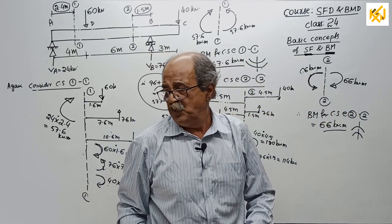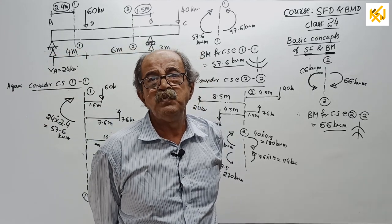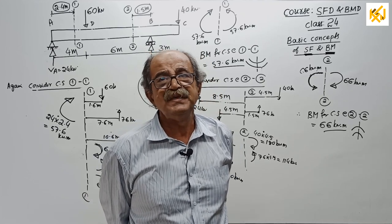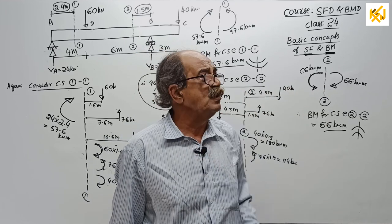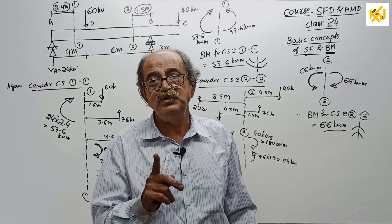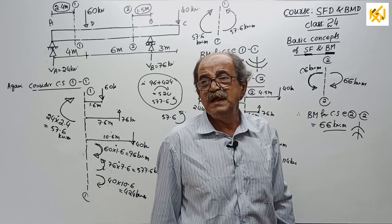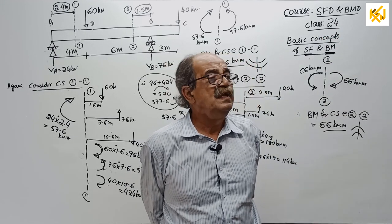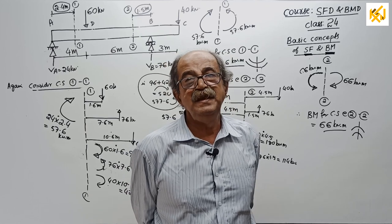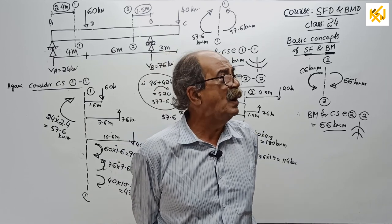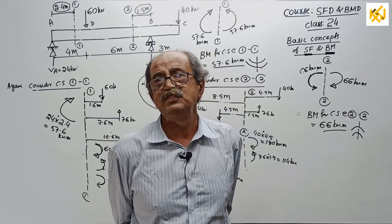Today I explained correctly how to get shearing force and bending moment — no sign convention, just the correct nature. Next class, class 25, I will start sign convention — very powerful. Every word I say there will count. Then I will cover definitions, comparison of equilibrium and section forces, relation between SF, BM, and load intensity, and different load types. The graphical representation of variation of shear force along length of beam is called SFD; of bending moment it is called BMD.